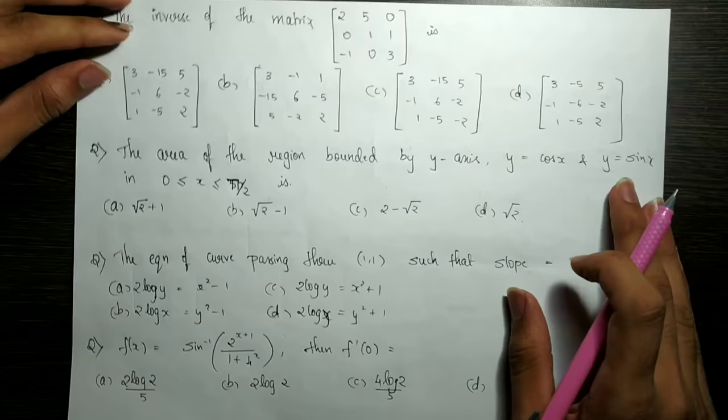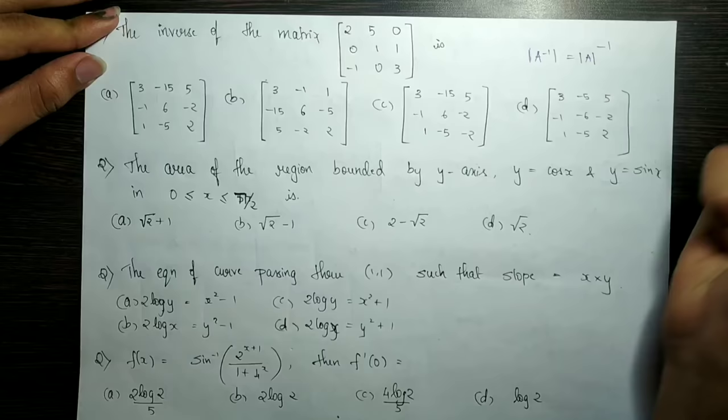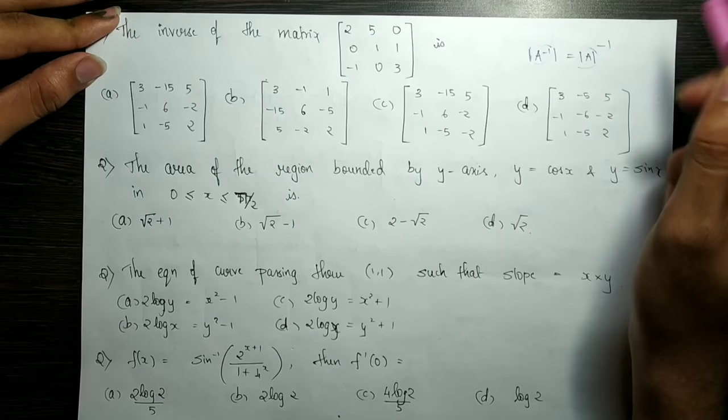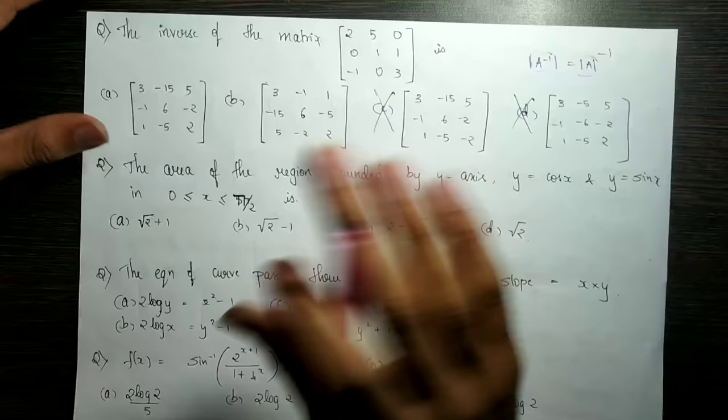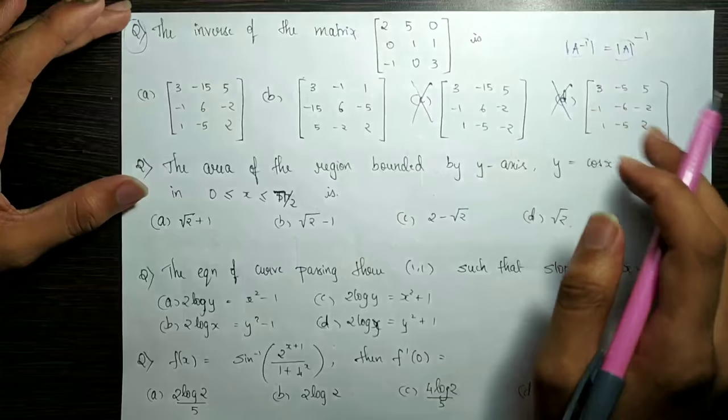First question is the inverse of the matrix 250. I am going to talk about the inverse candidate. The inverse topic is equal to the inverse. That's what the inverse says — the inverse doesn't matter. Because the inverse A inverse has been equal to the inverse.